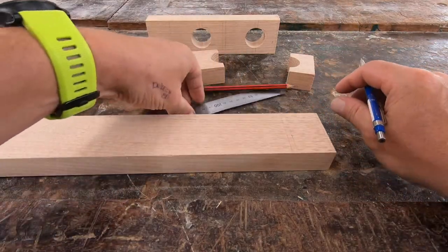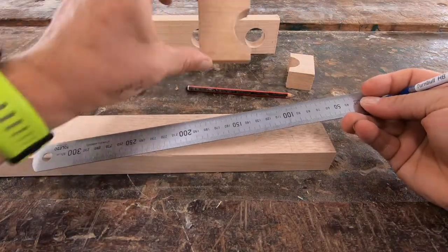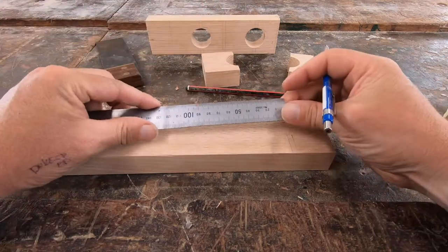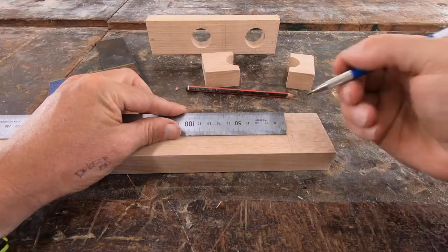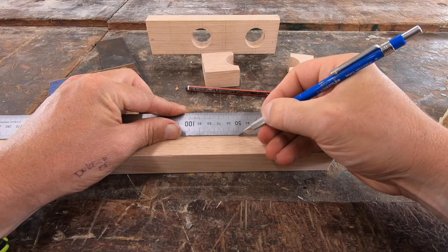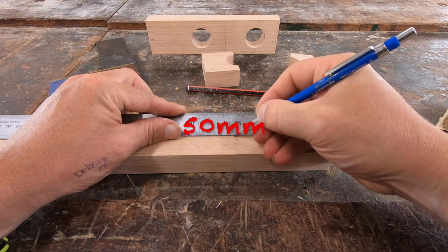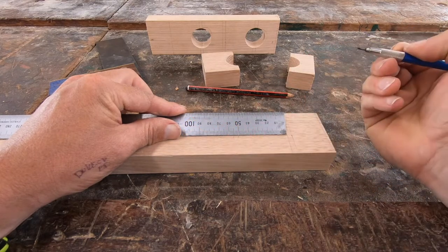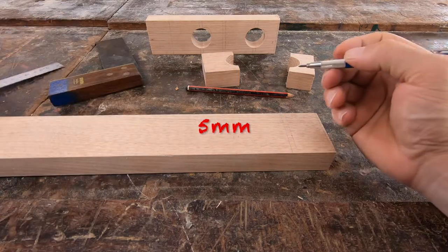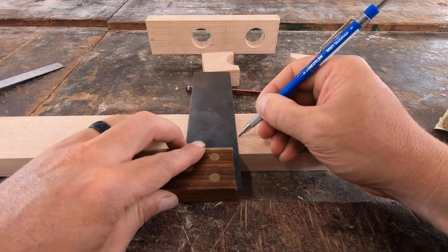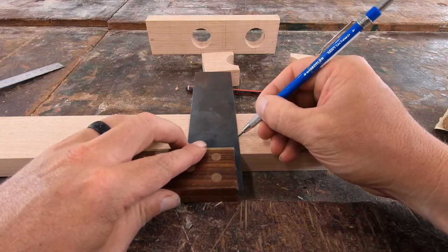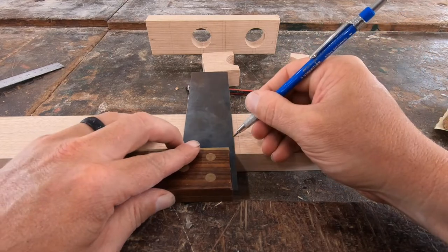The next measurement I need to do is 50 millimeters for this larger block. So rule on zero again marking out 50 and then I'm going to put another line at 50 millimeters. Now I can pencil on the line, tri-square and do my lines again.